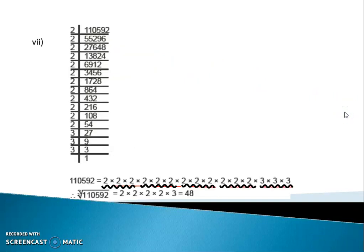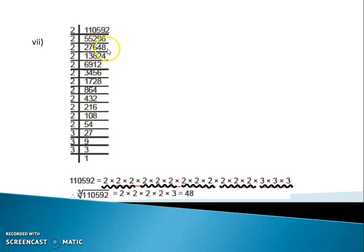Move to the next — question number 7: 1,10,592. So if you divide this by 2, we get 55,296. Divide by 2 again, we get 27,648.